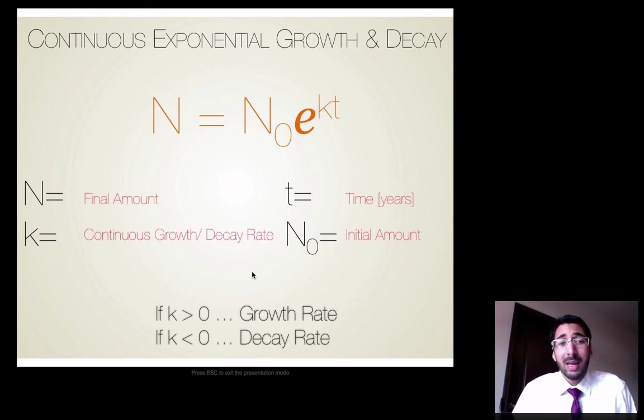This is our proper formula. It's going to be N, which equals our final amount. N sub zero, which is our initial amount. That's the amount we start out with. It's going to be E because it's continuous. And it's going to be raised to the K, which is our continuous growth and decay rate. This is pretty much the same thing as our rate, just written in a different way. And multiplied by T, and that's the time in years. If K is going to be greater than zero, it's a growth rate. And if K is less than zero, it's a decay rate. So make sure you write this down in your notes.